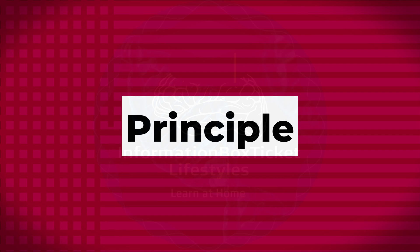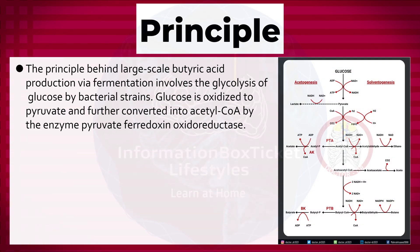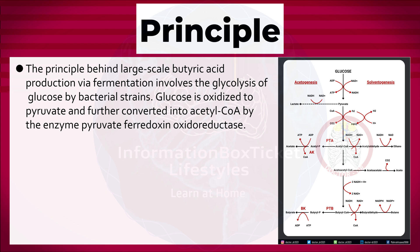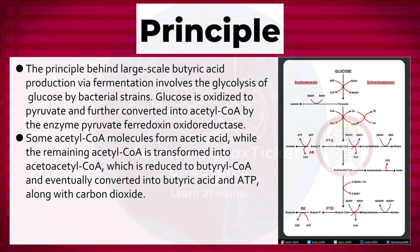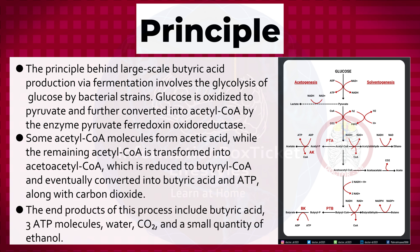Butyric acid fermentation principle: The principle behind large-scale butyric acid production via fermentation involves the glycolysis of glucose by bacterial strains. Glucose is oxidized to pyruvate and further converted into acetyl-coenzyme A by the enzyme pyruvate ferredoxin oxidoreductase. Some acetyl-coenzyme A molecules form acetic acid, while the remaining is transformed into acetoacetyl-coenzyme A, which is reduced to butyryl-coenzyme A and eventually converted into butyric acid and ATP, along with carbon dioxide. The end products include butyric acid, three ATP molecules, water, carbon dioxide, and a small quantity of ethanol.